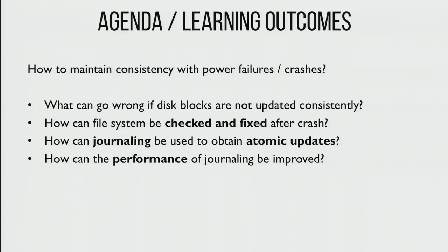Today we're going to talk about crash consistency — how to keep our very complicated file system data structures consistent if a crash occurs at some inopportune point in time. First we'll look at the motivation: what would go wrong with your file system if we had a crash. Then we'll look at an offline checker, then how journaling works — which all modern file systems do — and then some optimizations for journaling.